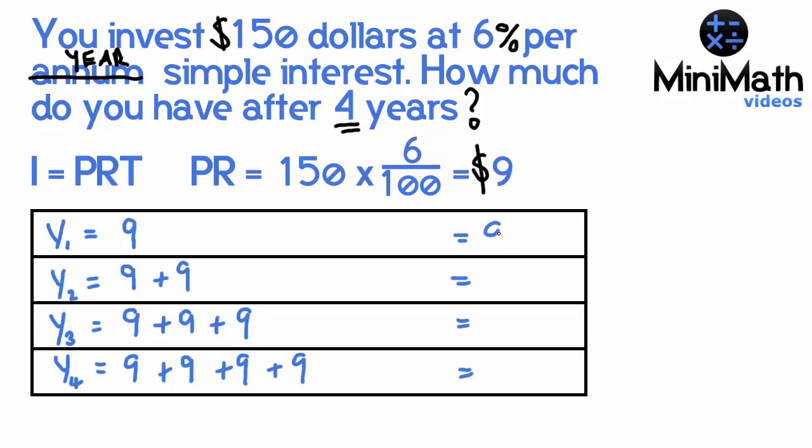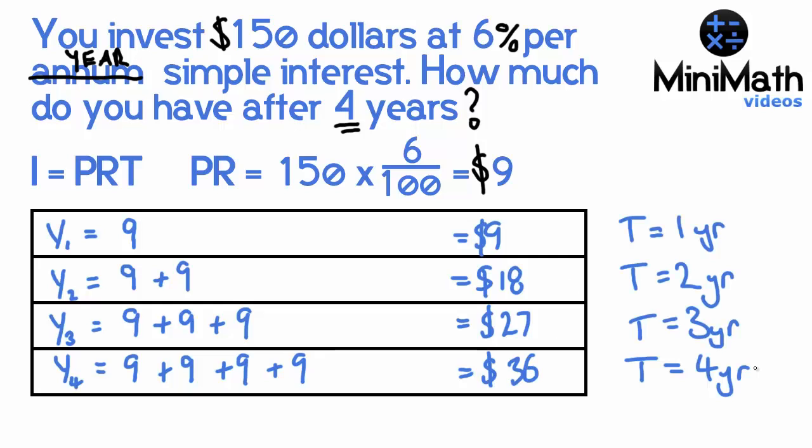If you were to do it for one year, you'd have $9 interest. Two years is $18 interest. Three years, $27 interest. And four years is $36 interest. T takes that into account. I hope that's made the simple interest formula a little clearer for you.